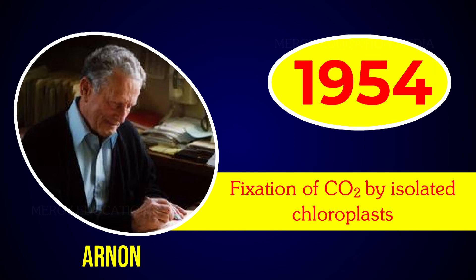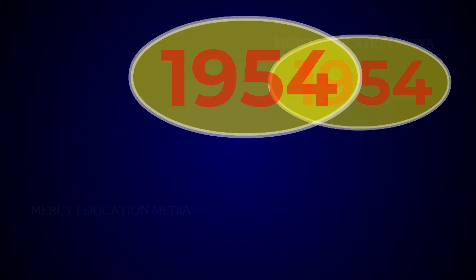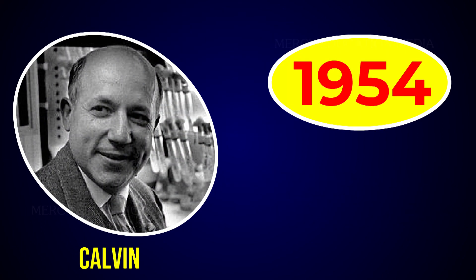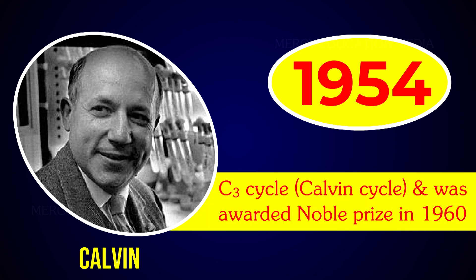In 1954, Arnon, Allen, and Bartley used carbon dioxide-14 to show the fixation of carbon dioxide by isolated chloroplasts. In 1964, Calvin traced the path of carbon in photosynthesis and gave the C3 cycle, known as the Calvin cycle, and was awarded the Nobel Prize in 1961.